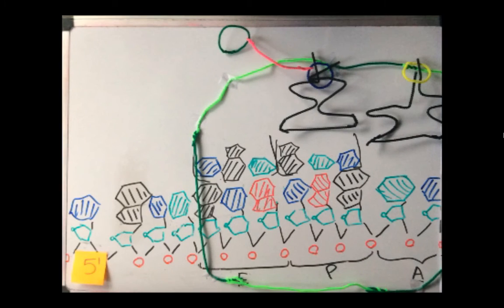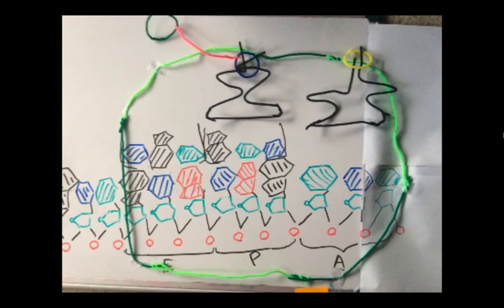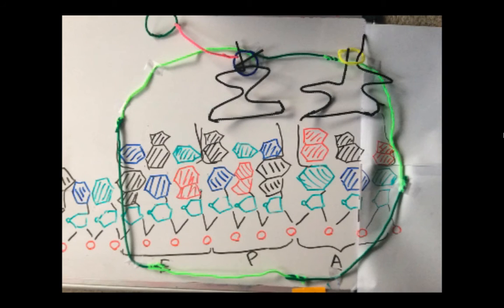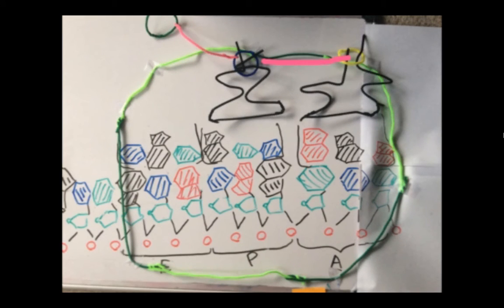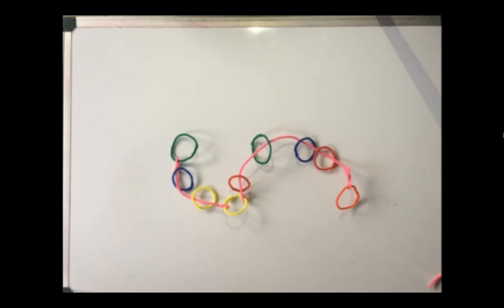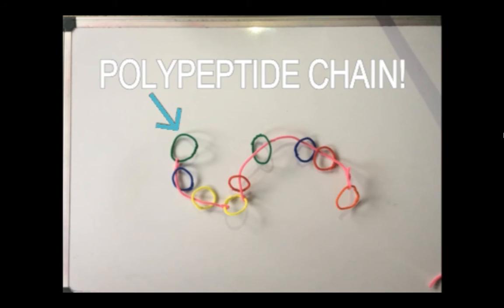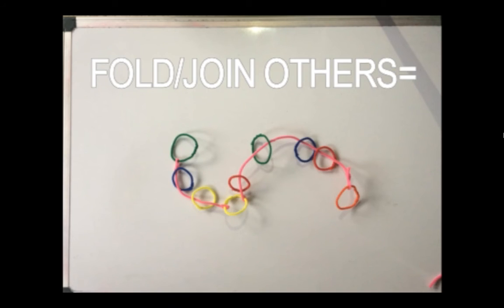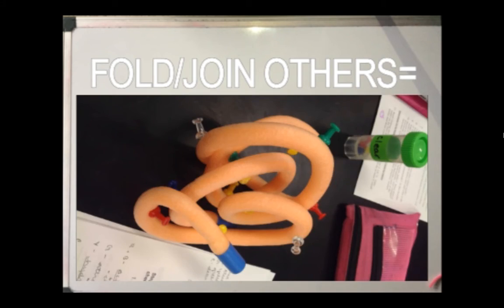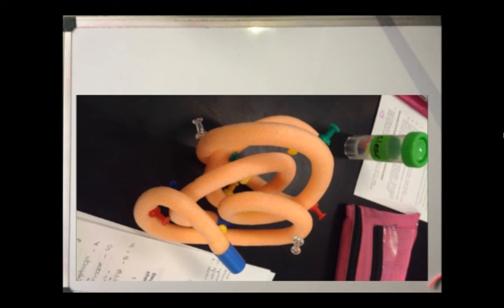The ribosome continues shifting, and as more tRNAs go in and out, the amino acids form peptide bonds between each other. This process continues until the ribosome reaches a stop codon. As this process goes on, the strand of amino acids grows in length. This is called a polypeptide chain. This polypeptide chain can fold and join other polypeptides to create a protein. These proteins are what cause the characteristics that make every living thing different.